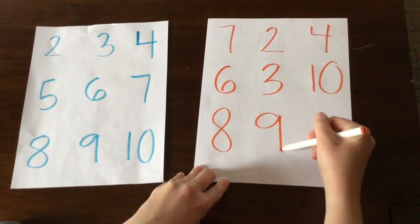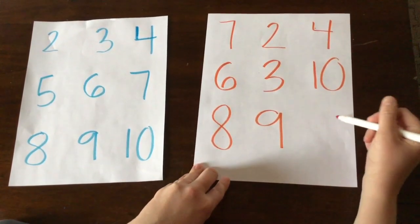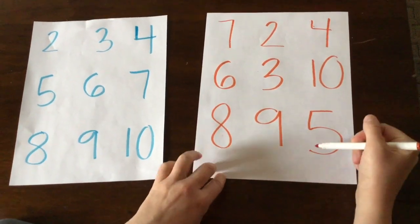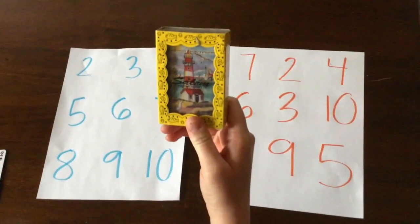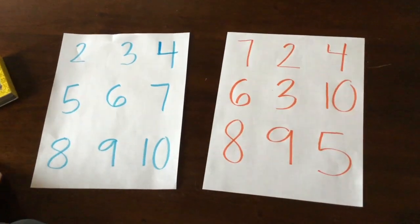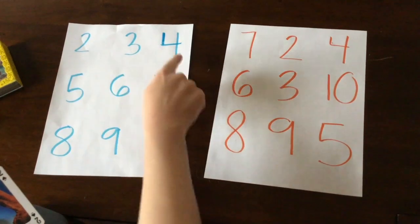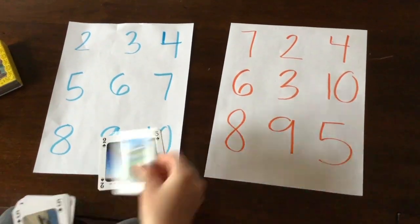Just make sure you write all the numbers from 2 through 10. Next, have an adult help you find a deck of cards and take out two of each number from 2 through 10.